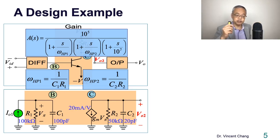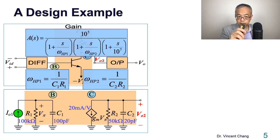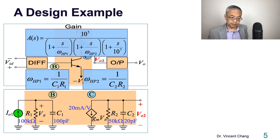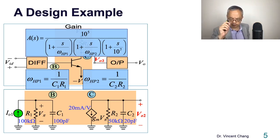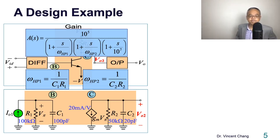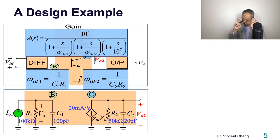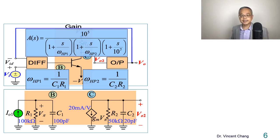Here's the data: R1 is 100 kilohms, C1 is 100 picofarads, R2 is 50 kilohms, C2 is 20 picofarads, and the transconductance of the second stage is 20 millisiemens per volt. So I give you five data points: two resistances, two capacitances, and one transconductance.